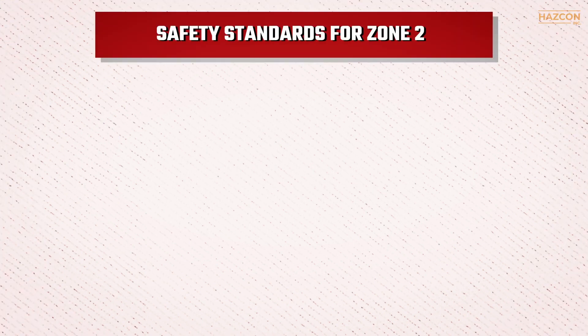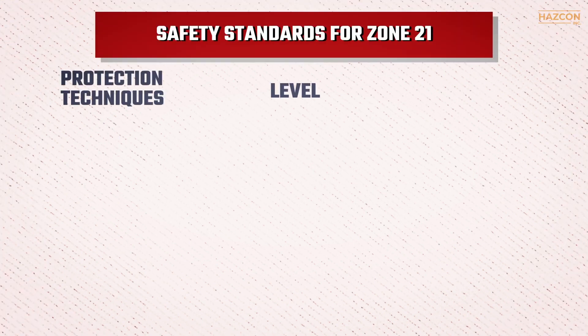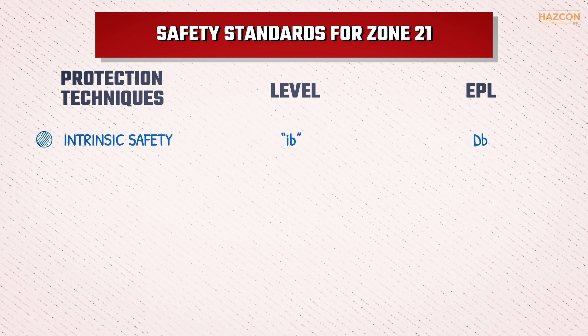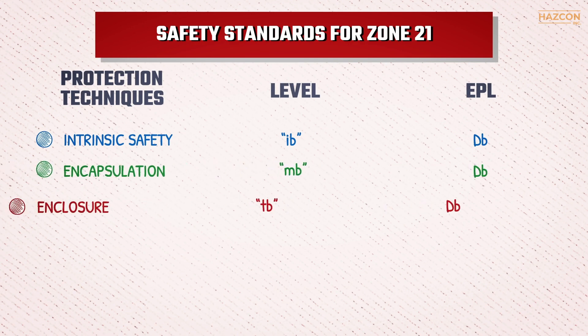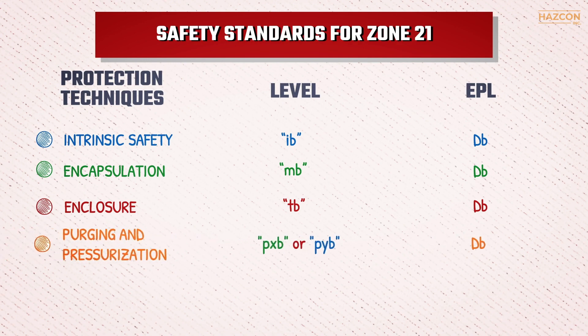In order to be certified as compliant with safety standards for Zone 21, an electrical device must be protected by one or more of the following protection techniques: intrinsic safety with level of protection IB, encapsulation with MB protection, protection by enclosure with TB protection, or purging and pressurization with PXB or PYB protections.